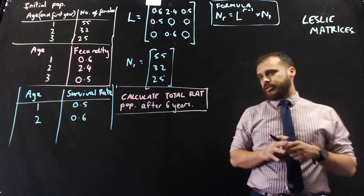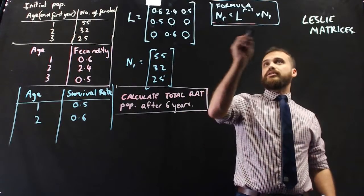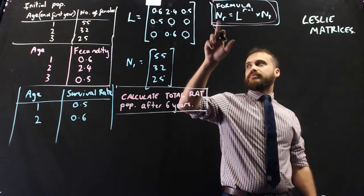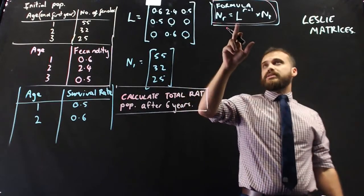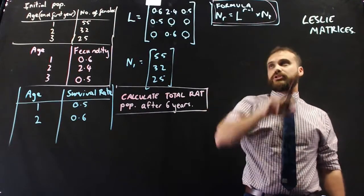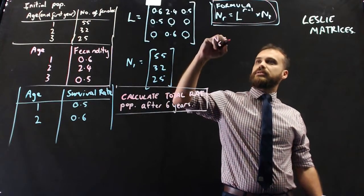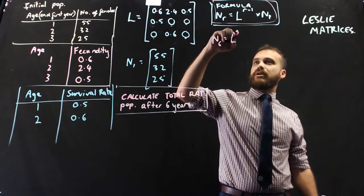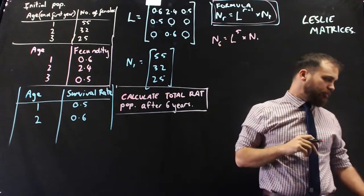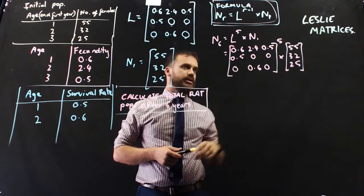The question we're going to try to answer is: calculate the total rat population after 6 years. Now the formula, this is really the only thing you need to remember, that and how to create a Leslie matrix. The size of the population after r years is equal to the Leslie matrix to the power of r minus 1 times the initial population. So n6 equals the Leslie matrix to the power of 5 times the original n1.